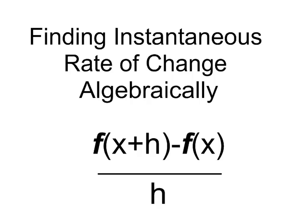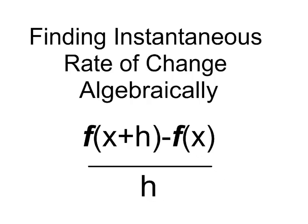We're going to be finding the instantaneous rate of change using the algebraic model. You'll notice that we're still using that same equation that we've used before, f at x plus a little bit minus f at x divided by a little bit.